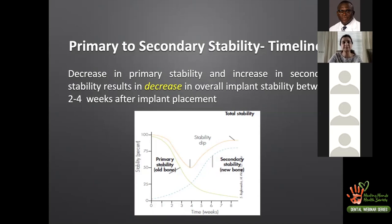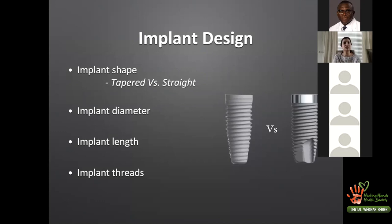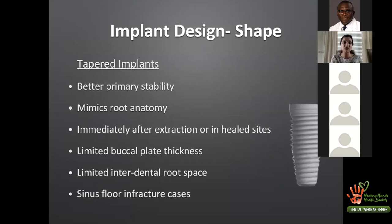Regarding implant shape — tapered versus straight — tapered implants better provide primary stability, mimic root anatomy, and are typically used after immediate extractions or in healed sites where the buccal plate thickness is limited. In limited interdental root space, tapered implants are also the implant of choice. When performing the Summers technique for sinus infracture with about 3 mm of bone to gain, a tapered implant is often used for easy wedging and primary stability.